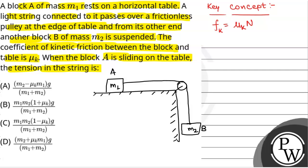This is block B and it has mass M2. The coefficient of kinetic friction between the block and the table is mu k. When block A is sliding on the table, we have to find the tension in the string. Block A is sliding with an acceleration A, so the acceleration of block B will also be A. There will be a tension in the string — let us call this T.